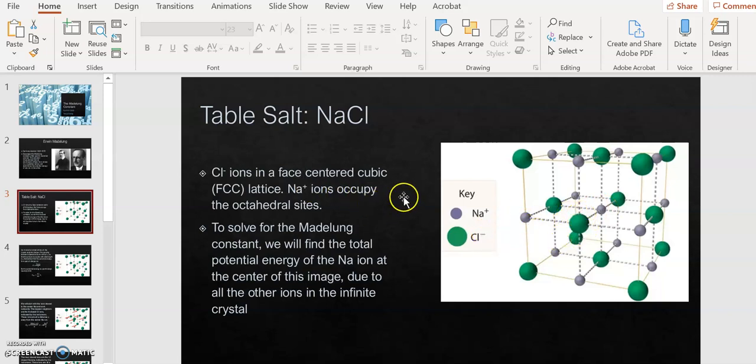What we're going to do is find the potential energy from this sodium ion at the center of this picture due to all the other ions in the lattice. This is just a chunk, but you're going to imagine in your mind an infinite crystal that keeps stretching on in this perfect repeating pattern in all three dimensions.